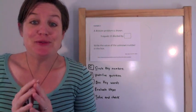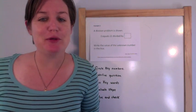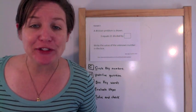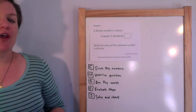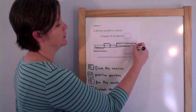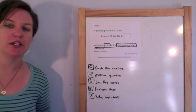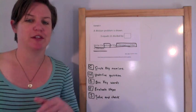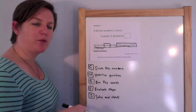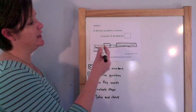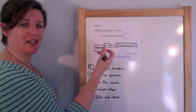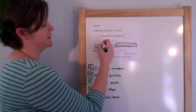Example 2: a division problem is shown. 3 equals 21 divided by box. Box equals the unknown number. Write the value of the unknown number in the box. I'm using my cube strategy here — it's not really a word problem, but it helps me understand the problem and pull out the important bits. Although some people might understand the words, I'm going to show you how to switch it to numbers and symbols you're probably more accustomed with.